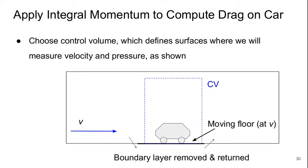If we want to apply integral momentum to compute drag on a car, here's how we could go about doing it. We would choose our control volume, shown as this blue dashed box, which defines the surfaces where we're going to measure velocity and pressure. If we've got this properly set up wind tunnel for a car, we would have a section of moving floor that's moving at the same velocity as the incoming air, and we would remove the tunnel boundary layer just before and re-add it back in just after to maintain mass conservation.